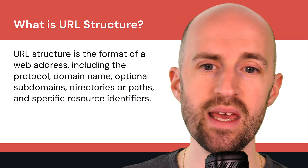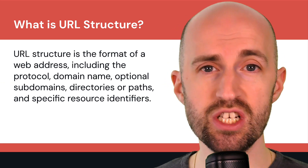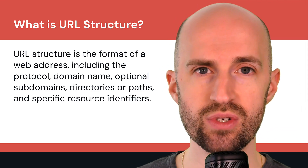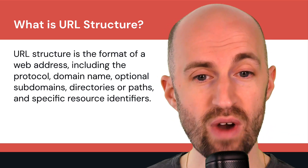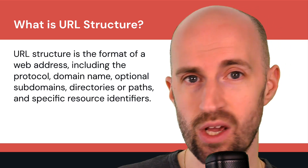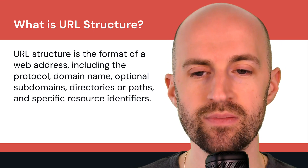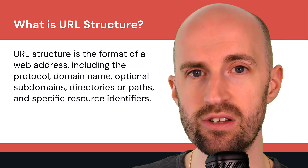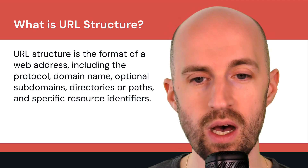So what is a URL structure? It's basically the format of a web address, and that includes the protocol like HTTP or HTTPS, the domain name like example.com, optional subdomains such as blog.example.com, directories or paths like example.com/category-name or /blog, and then specific resource identifiers — like a JPEG image, a spreadsheet, or a video.